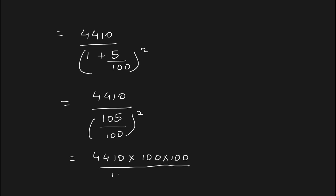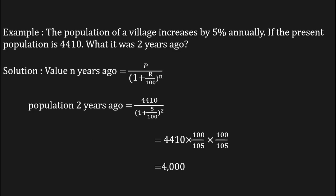Divided by 105 times 105. Now solving this equation, we'll be getting the value as equal to 4000. This is the answer. 4000 is the population of the village two years ago. In this way we have to solve the given problem.